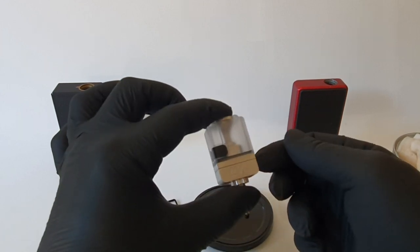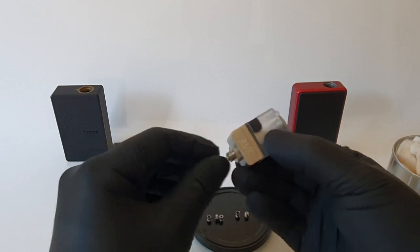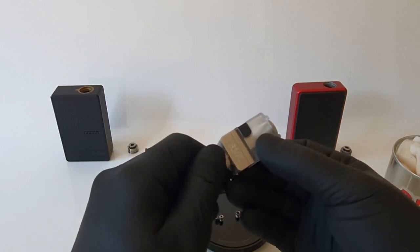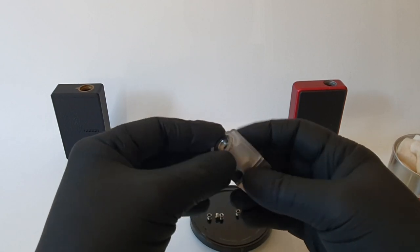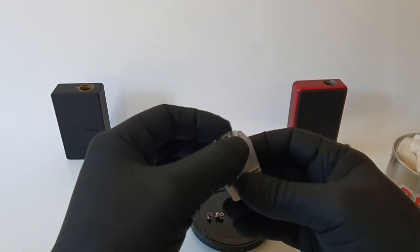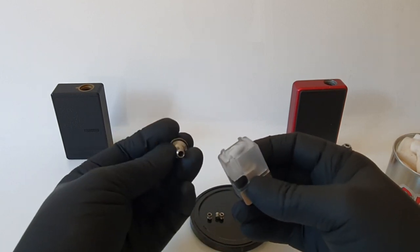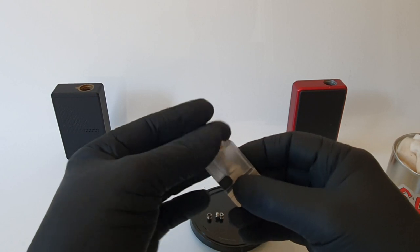So when you get it out of the tin, it will appear like this. Now it's very simple. There's a 510 adapter on the bottom which I'm probably going to take off. And you'll notice that the top part here, the chimney, is actually relatively loose. That's because I don't want them to stick until you get some juice on there.